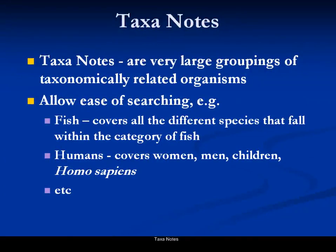Now I'm going to look at searching using Taxonotes. Taxonotes are very large groupings of taxonomically related organisms and allow ease of searching. For example, if I search for 'fish', this covers all the different species that fall within the category of fish. Another example is 'humans', which covers women, men, children, Homo sapiens — so instead of needing to search for all those different words, I would just use the one taxonote 'humans'.